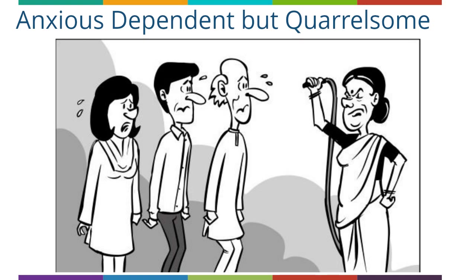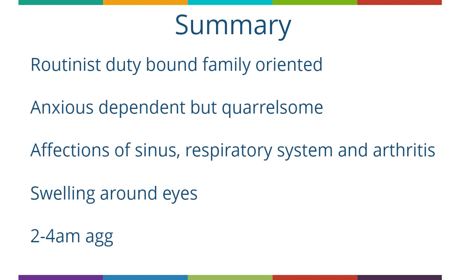The aspect of quarrelsomeness differentiates Kali from Calcaria, because Calcaria is also anxious, dependent, and family oriented - concerned with things about job, money, routine, and security - but they are not quarrelsome like the Kalis. So a person who is very routinist, duty-bound, anxious, dependent, and at the same time quarrelsome with family members, with sinus affections, respiratory issues, or arthritic pains, with characteristic swelling under the eyes and typical 2-4am aggravation, should make one think of a Kali salt.